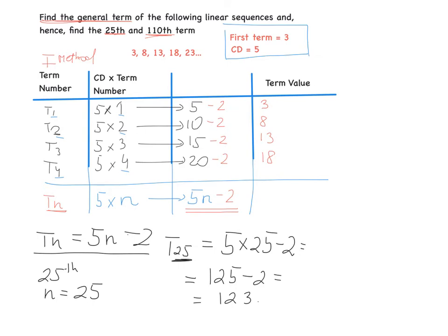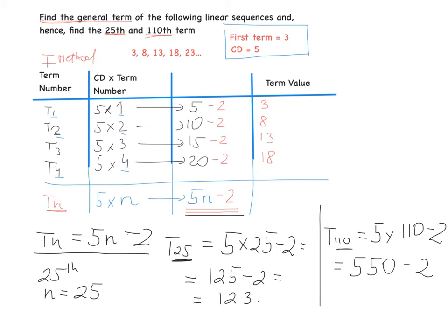Now to find the 110th term — exactly the same thing. T110: N is 110. Looking at our formula, we have 5 × 110 − 2 = 550 − 2 = 548. And that is the 110th term.